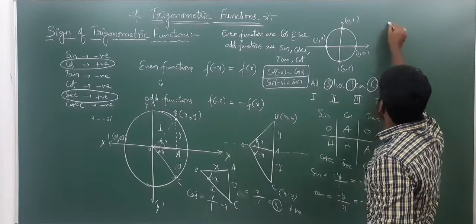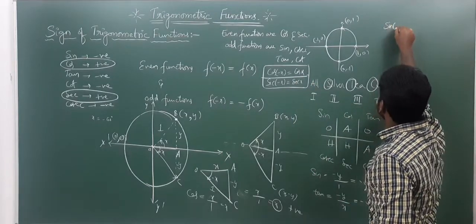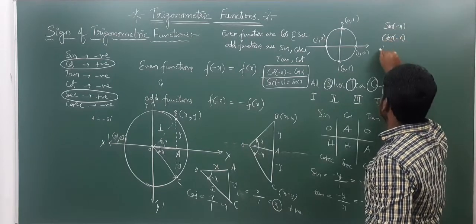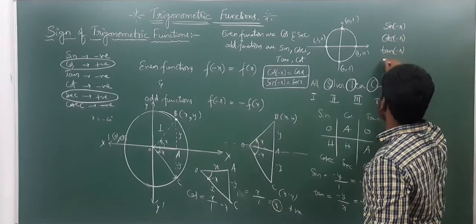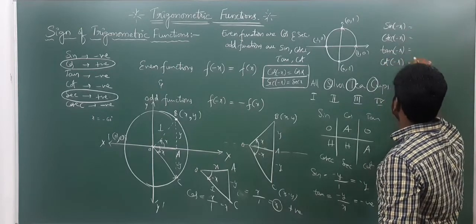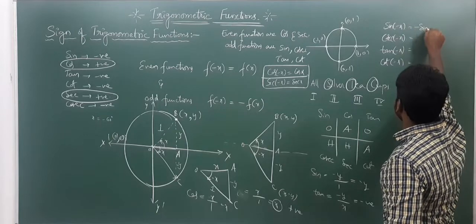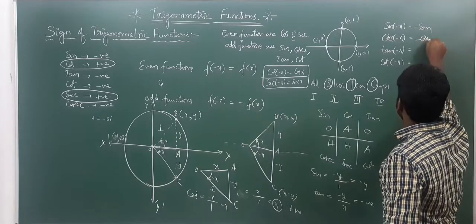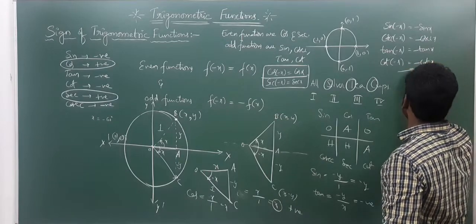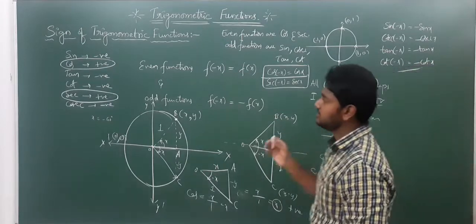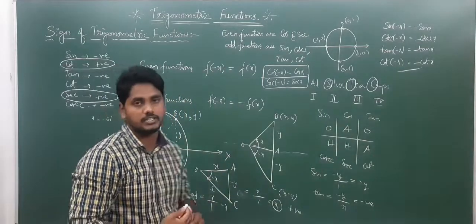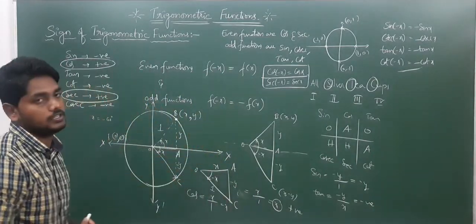Remember: cos of minus x equals cos x, and secant of minus x equals secant x. These two are even functions. But sine of minus x equals minus sine x, cosecant of minus x equals minus cosecant x, tan of minus x equals minus tan x, and cot of minus x equals minus cot x. These four are odd functions. Pause the video and note it down.